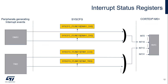The left part of the figure represents the peripherals able to assert external interrupts. The SysCFG interrupt status registers appear in the middle of the figure. The connection of the external interrupts to the NVIC is indicated on the right part of the figure.